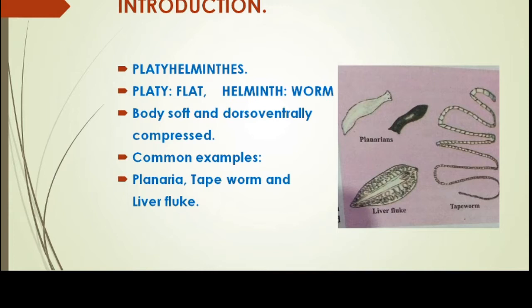The body is flattened and leaf-like in structure. Common examples in this phylum include planaria, tapeworm, and liver fluke. Both parasites and free-living organisms are included. Now let's go to their general characters and learn their details.